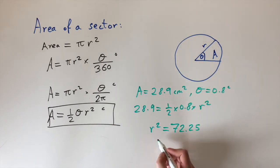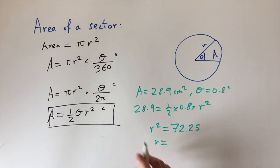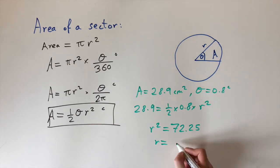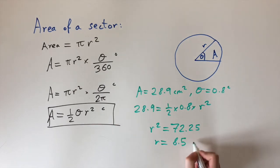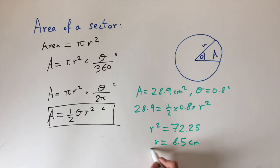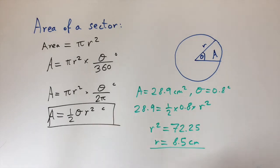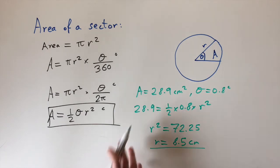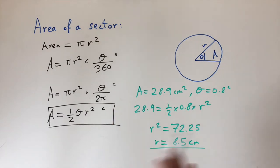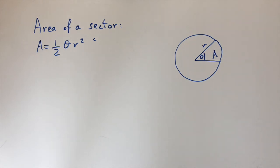Taking the square root gives us the radius, which comes out very conveniently as 8.5 centimeters. That's a simple example of using the formula to find a missing quantity. Now we're going to do one more example that's a bit harder.